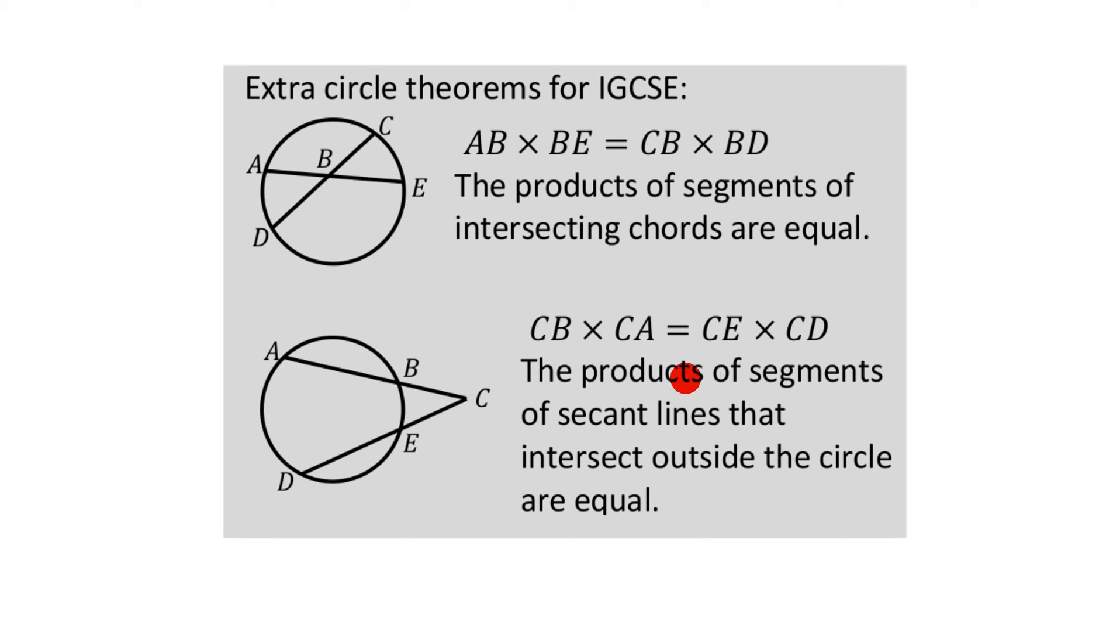Let me quickly talk you through this, the products of the segments, you've heard all this before. The products, when you multiply the segments, the pieces of, what pieces of? The secant lines, the bits of, you know, these weird lines go from inside to outside there. That intersect, of course they intersect. Outside the circle are equal, so that's it really.